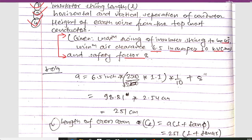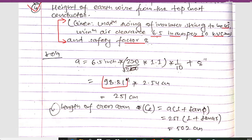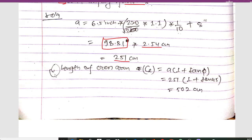The phase voltage is 220 divided by root 3, and for maximum system voltage we multiply by 1.1. With the minimum air clearance of 6.5 inches per 10 kV and safety factor of 8, the formula gives: A = 6.5 × (220/√3 × 1.1 / 10) × 8 = 98.81 inches. Multiplying by 2.54 to convert to centimeters gives 251 centimeters.